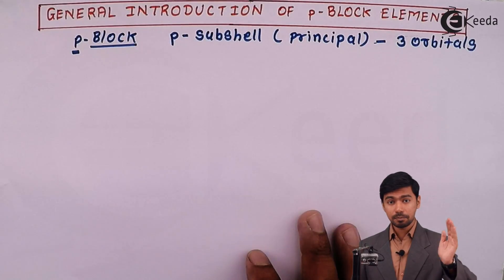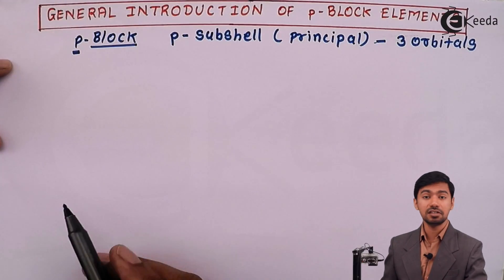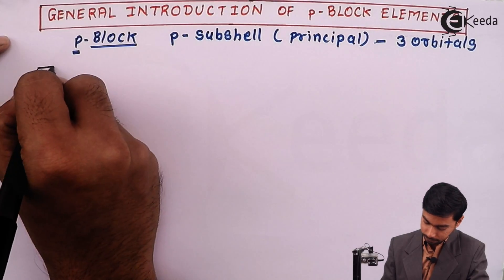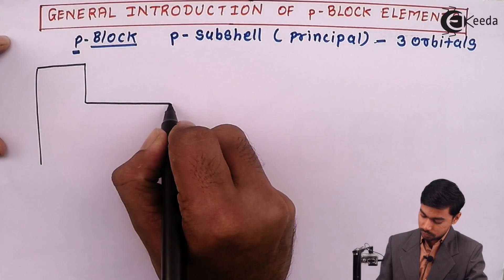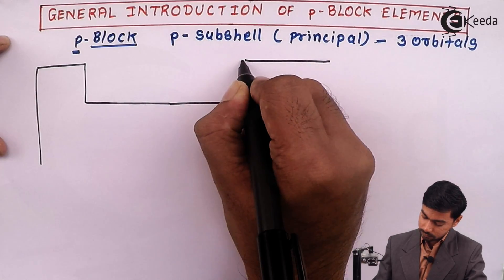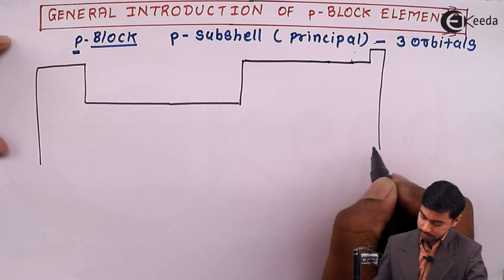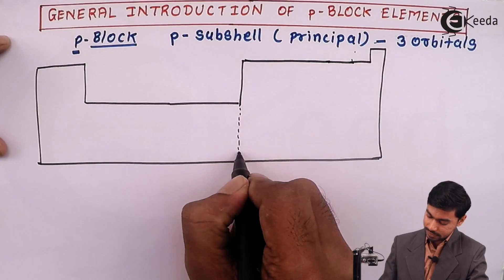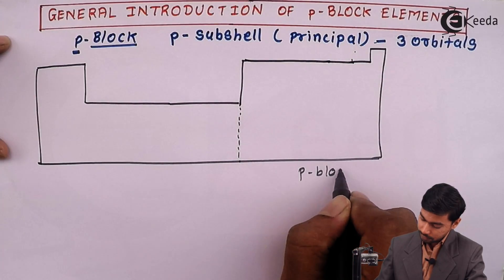Now, where do p-block elements stand in the periodic table? As per the general schematic representation of the periodic table, we can identify the s-block, the d-block, and the p-block. The part we are separating here is called the p-block.